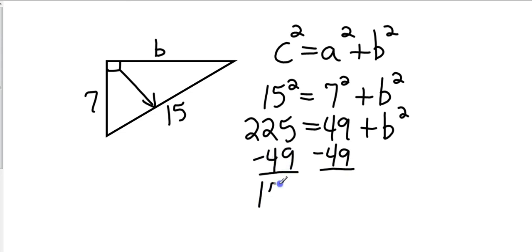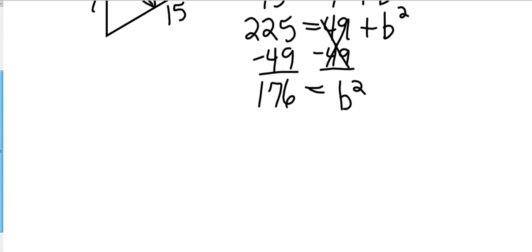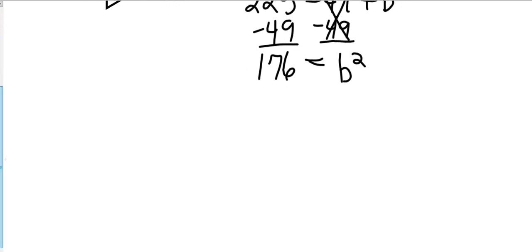And so that's going to give me 176. That cancels. It's B squared. Scroll down just a little bit here. There we go. Square root both sides. Now, you will find this time that when you take the square root of 176, you're not going to get an exact answer.